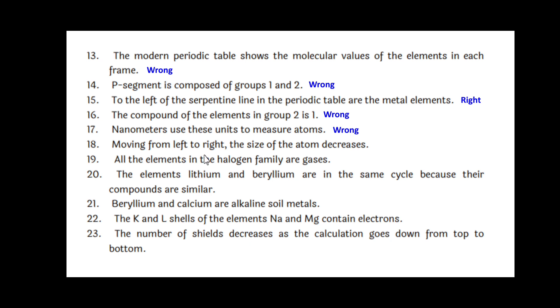Moving from left to right, the size of the atom decreases. This is right. All the elements in the halogen family are gases. The elements lithium and beryllium are in the same cycle because their compounds are similar. This is wrong. Beryllium and calcium are alkaline earth metals. Right. The K and L shells of the elements sodium and magnesium contain electrons. Right. The number of shells decreases as the calculation goes down from top to bottom. Wrong.